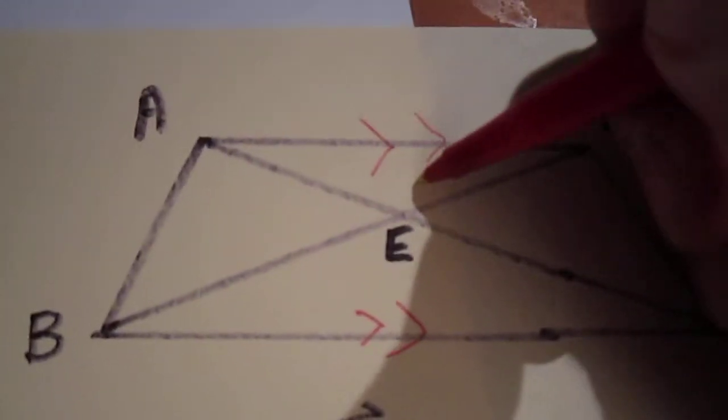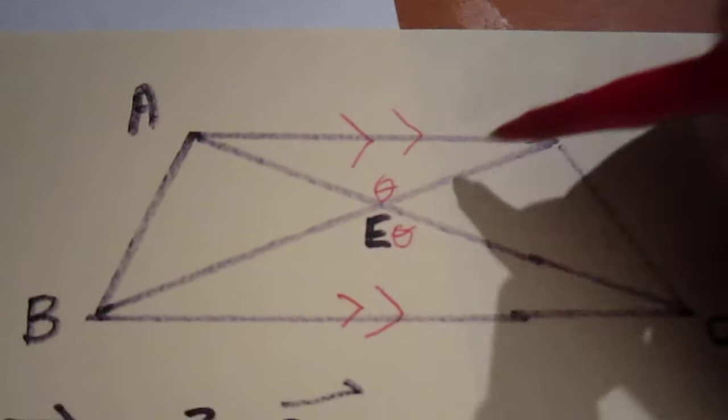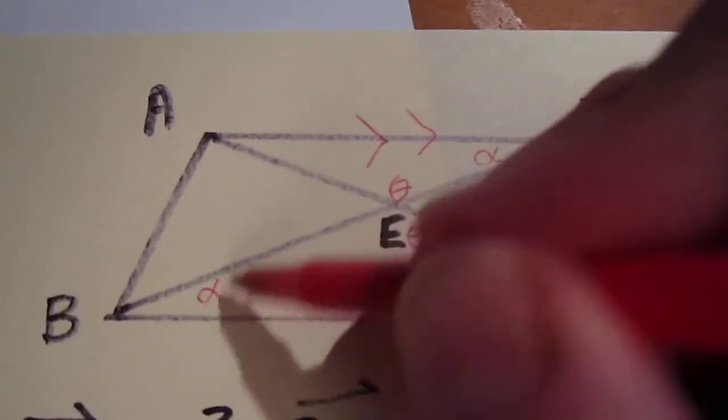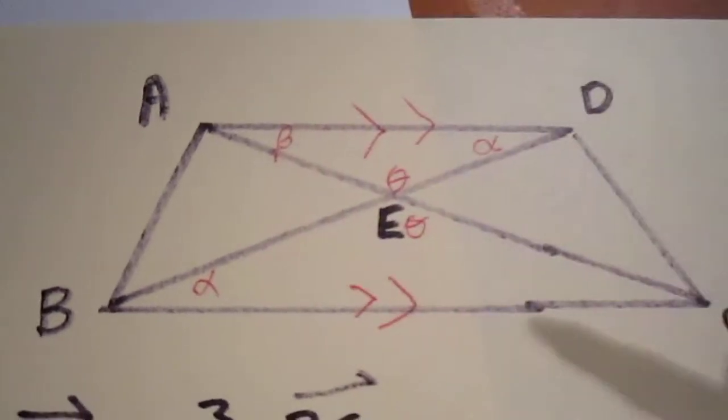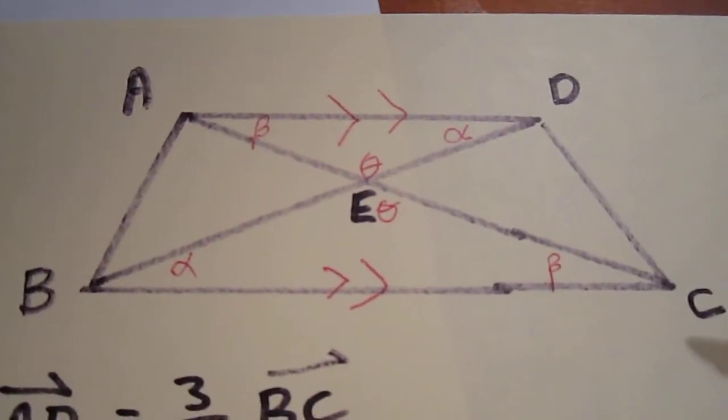That's convenient for us because we already know that this angle and this angle are equal, but now we know by the parallel lines that this angle equals this angle and this angle equals this angle. We have similar triangles.